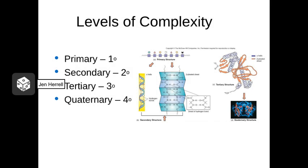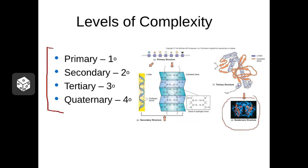Proteins don't exist as just long strings of amino acids — they have complex three-dimensional shapes. So how do they achieve this? Well, that long string of amino acids has to fold on itself. There are actually three to four different levels of folding that string has to go through to achieve this. Let's take a look at each one.